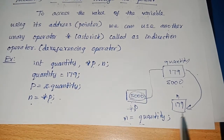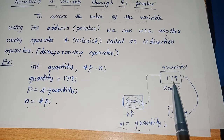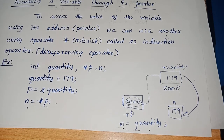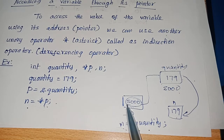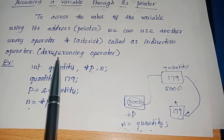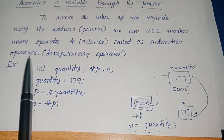This can be easily done by n = quantity, so automatically quantity will be copied to n. But we want to copy this value 179 using the pointer variable, because the address of quantity is stored in p. How can we access the value of quantity by its address? That can be done by the operator called the dereferencing operator.